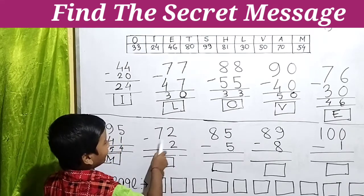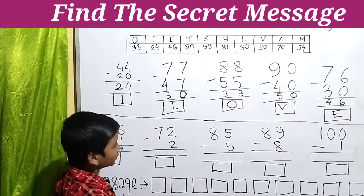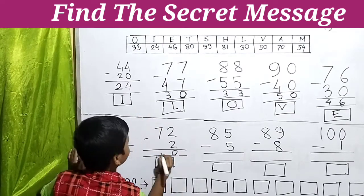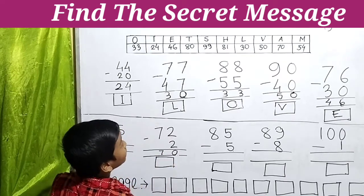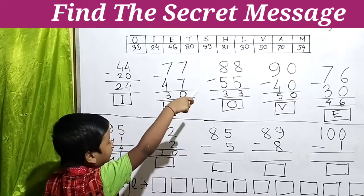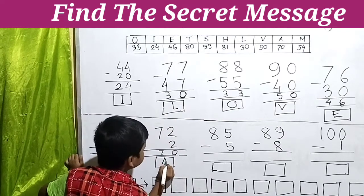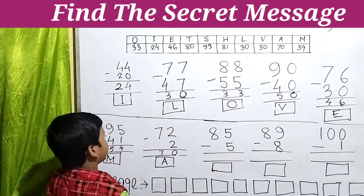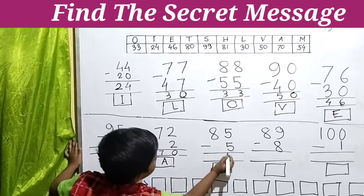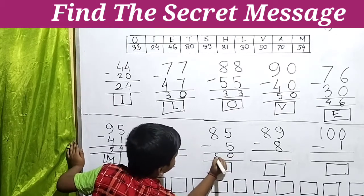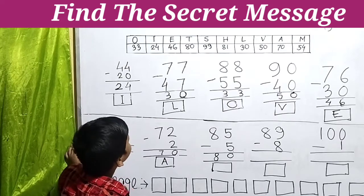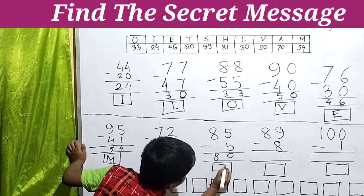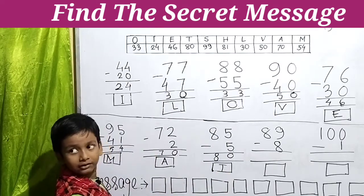Next, 72 minus 2. 2 minus 2 equals 0. 7 minus nothing equals 7, so the answer is 70, and 70 means A. We write A. Next, 85 minus 5. 5 minus 5 equals 0, then 8. So the answer is 80, and 80 means T. We write T here.